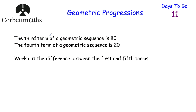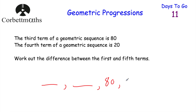The next question says the third term of a geometric sequence is 80 and the fourth term is 20. We've been asked to work out the difference between the first term and the fifth term. Let's jot down the sequence: we don't know the first or second term, the third term is 80, the fourth term is 20, and we don't know the fifth term.